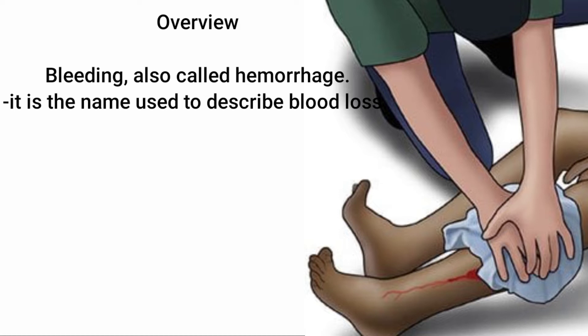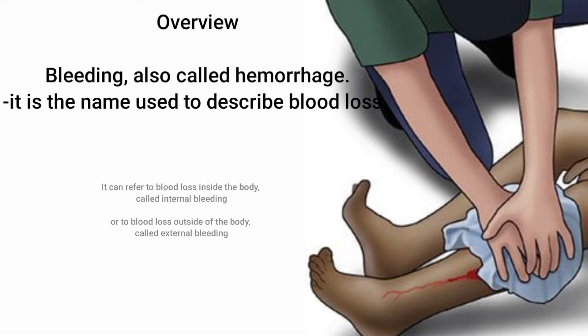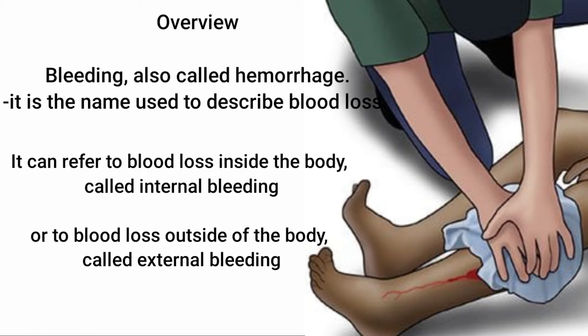We have to know what is bleeding. Bleeding, also called hemorrhage, is the name used to describe blood loss. Bleeding can refer to blood loss inside the body, which is called internal bleeding. And if it is blood loss outside the body, it is called external bleeding.